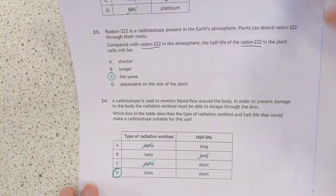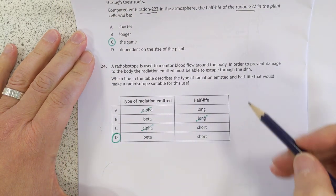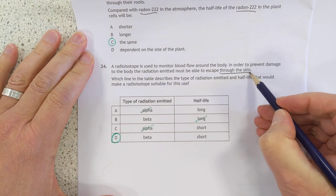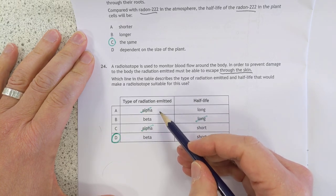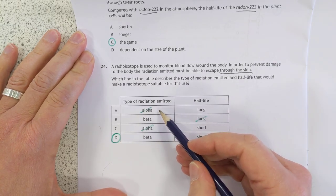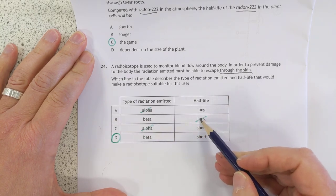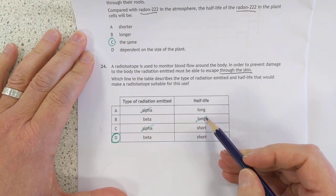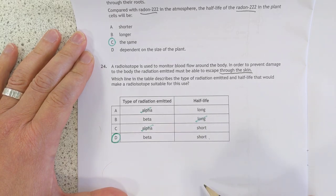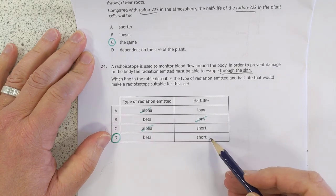24. Medical use of a radioisotope. If it's punching out through the skin, then alpha doesn't even make it through paper, never mind through human skin. So we can scratch the two alphas. Beta will make it through your skin. And you don't really want this isotope hanging about in your blood for the next 10 years.